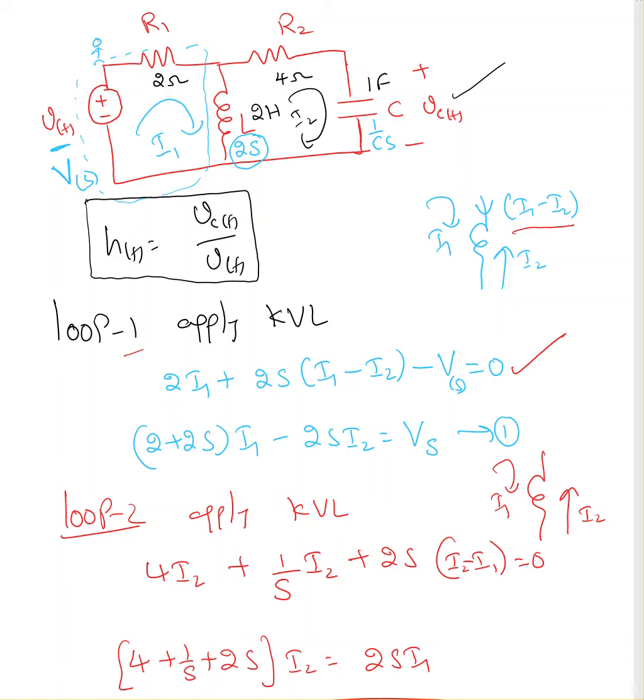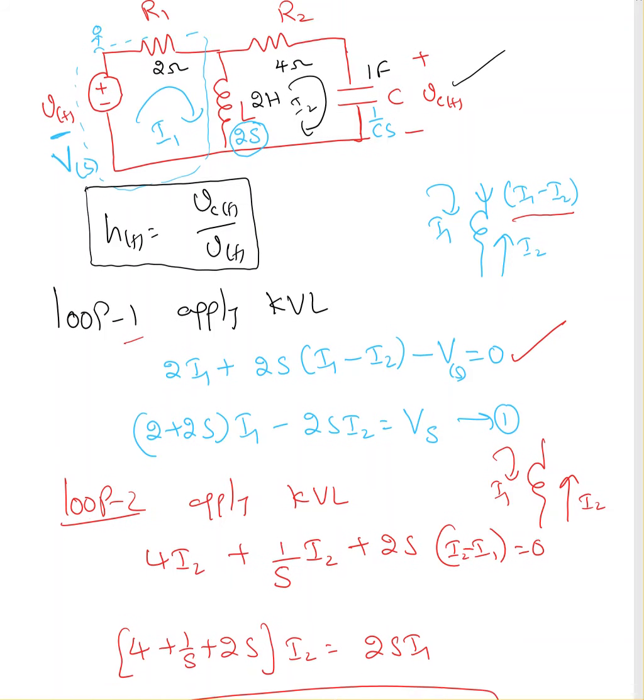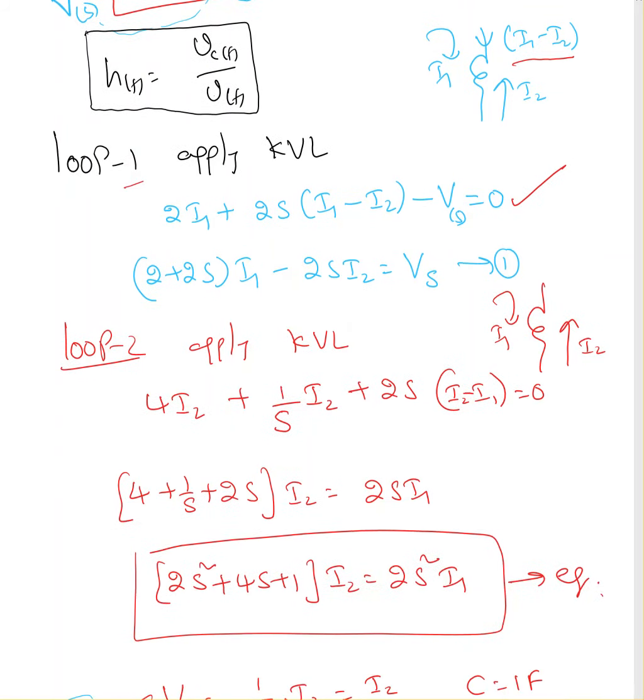So when it comes to loop 2, it is I2 minus I1. So loop 2, I end up with the equation which gives me relation between I2 and I1.